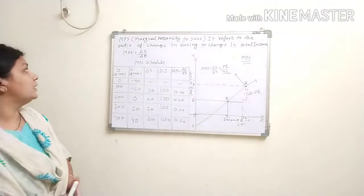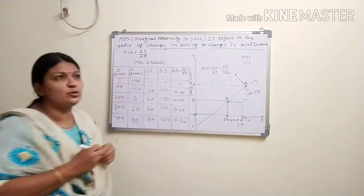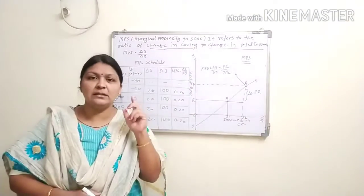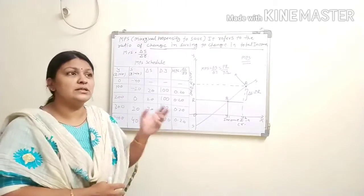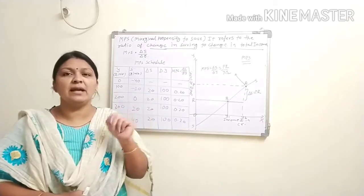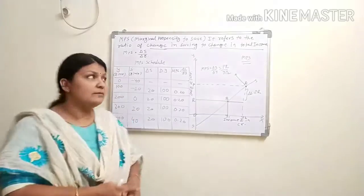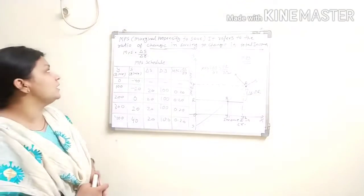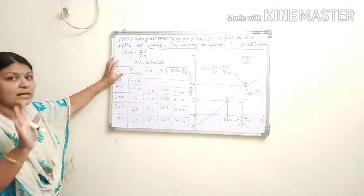MPS refers to the ratio of change — denoted by delta — change in saving and change in total income. When we look at APS, it refers to the ratio of saving to national income, not the change. But MPS — marginal always stands for change — so MPS refers to the ratio of change in saving to change in national income.